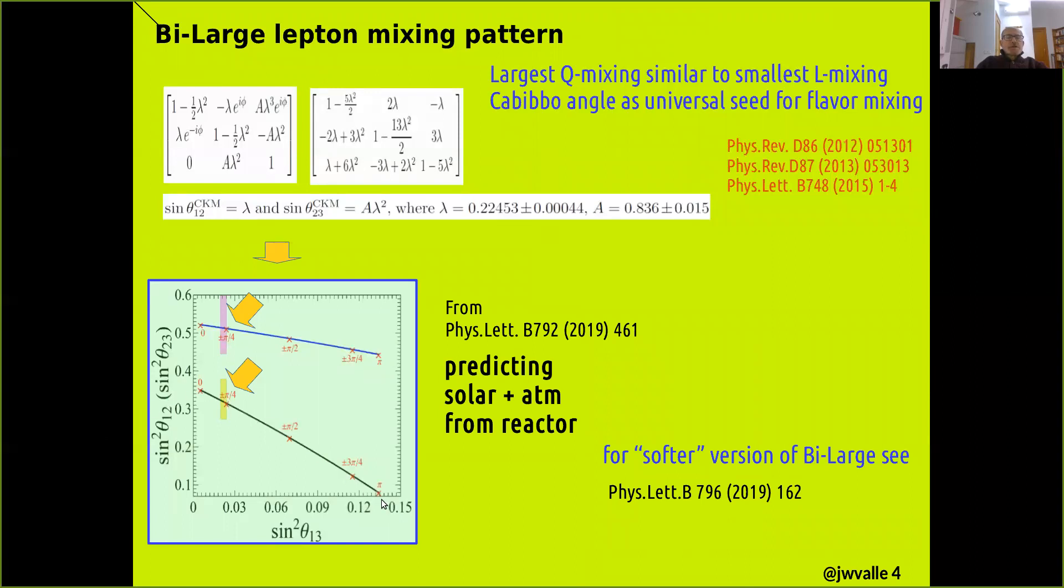So if you know lambda you know them all. And indeed this is what one finds. In black you see the prediction for the solar mixing angle, and in blue the prediction for the atmospheric mixing parameter. You see that both determinations are very very sharp indeed, because theta one-three is well measured.